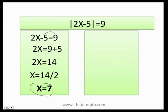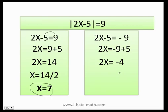Now I can go ahead and do the other side. 2x minus 5 equals negative 9. I pass the 5 to the other side. I get 2x equals negative 9 plus 5, which is negative 4. I divide both sides by 2 and I get x equals negative 2.